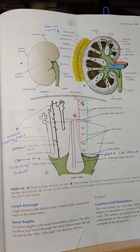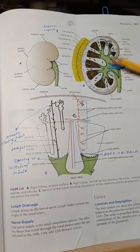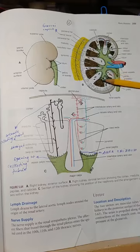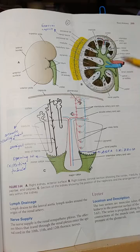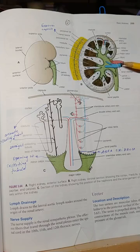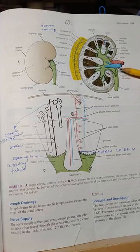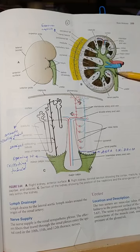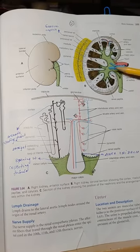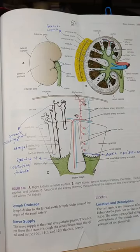This is the sagittal section showing the structures inside the parenchyma. Starting at the hilum of the kidney, you have the renal vein, renal artery, and the renal pelvis, which is found in the hilum. The hilum continues inward as a wide area called the renal sinus.